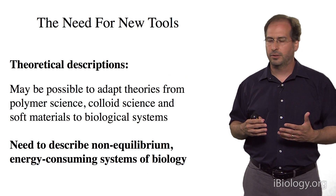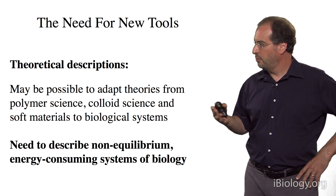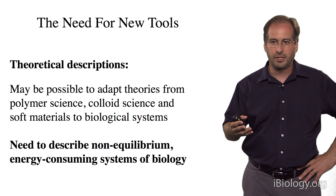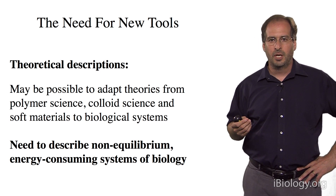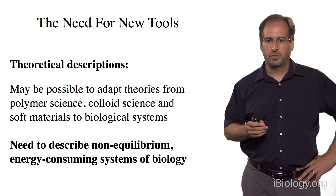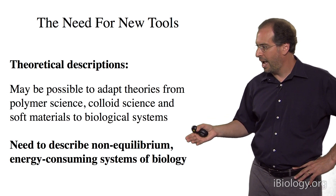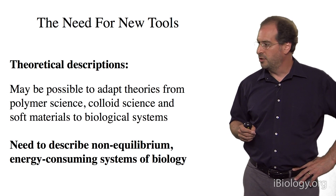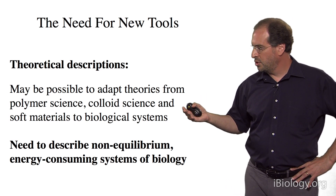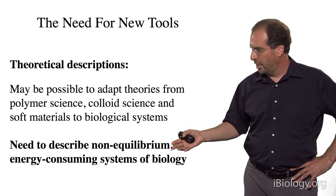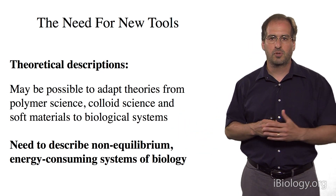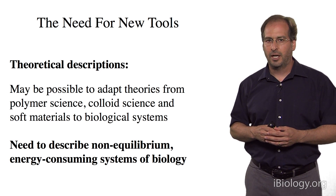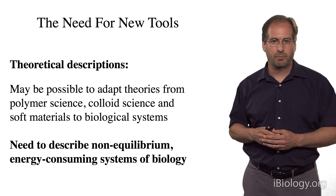We also need new theoretical descriptions of these structures. It may be possible to take theories from polymer science, colloid science, and material science and apply them to biology. But an important distinction is that biology is almost always held away from equilibrium by the consumption of energy through ATP hydrolysis. So one needs to incorporate this idea of systems away from equilibrium, and studies of active matter in the soft matter physics world may very well be applicable to biology.